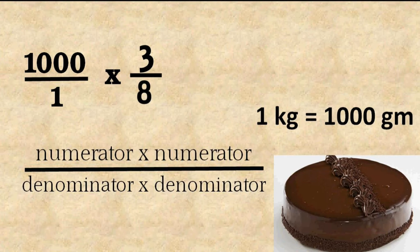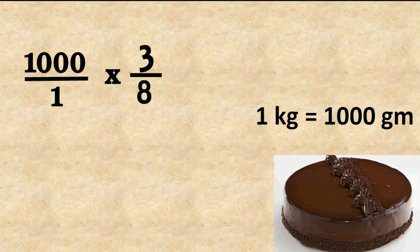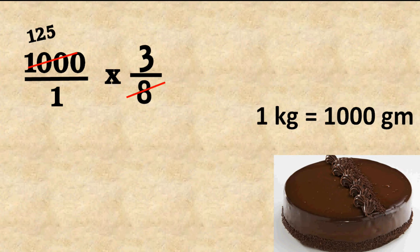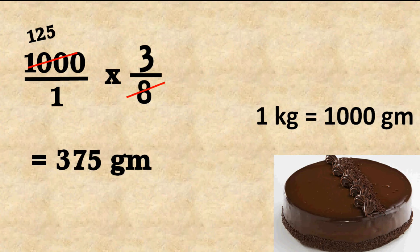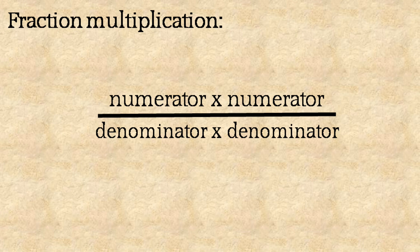We multiply numerator with numerator and denominator with denominator: one thousand multiplied by three, over one multiplied by eight. We can cancel common factors from numerator and denominator to make the fraction smaller. One thousand is divisible by eight — canceling gives one hundred twenty-five. One hundred twenty-five multiplied by three equals three hundred seventy-five grams.